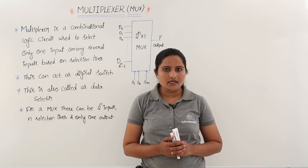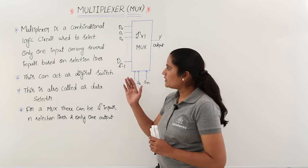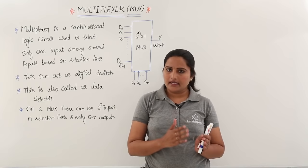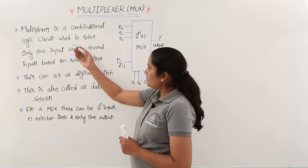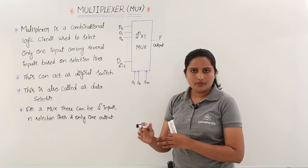A multiplexer is a combinational logic circuit which will provide 2-power-n inputs to 1 output — that means it will select one input to output based on selection lines. Multiplexer is a combinational logic circuit used to select only one input line to the output based on the selection lines.